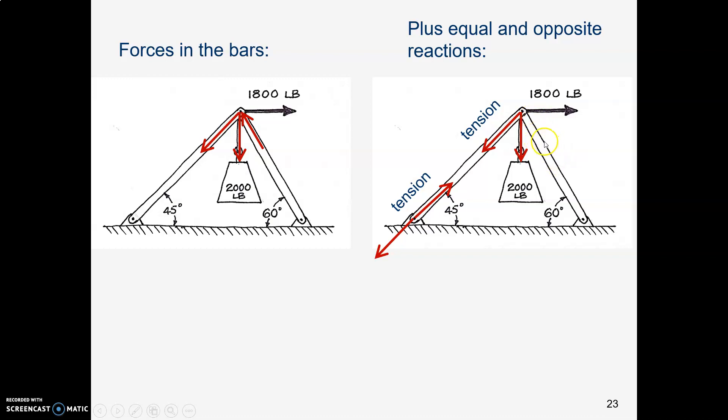Now this bar over here is in compression, which means it's in compression all the way along. It couldn't switch to tension someplace. It would explode if it did that. So it's in compression all the way along. That means if you did a free body diagram down at this joint at the bottom, you would see, still in compression. The force is pushing towards that joint, and that means there's an equal and opposite reaction from the ground pushing back up toward that joint.